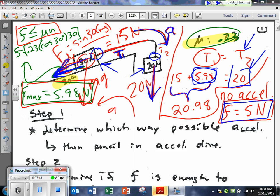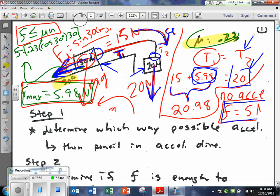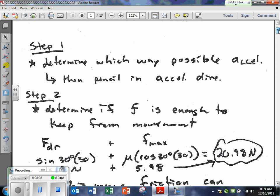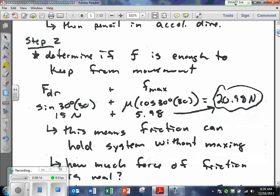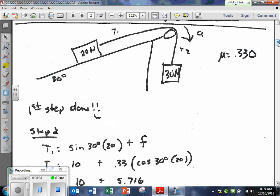Okay, so everything we just talked about there is in the notes. So, everything that we just went through are in the notes. Determine which way possible acceleration, then pencil acceleration in on the picture. Step 2, determine if friction is enough to keep for movement. So, we did all these steps together, but they are printed out for you. They will be on the Moodle site. And then we came up with, oh, I guess you never did solve for tension. But, in the end, the tension would have been 20 by using either of the two formulas. Okay. So, let's try one where hopefully this thing moves.